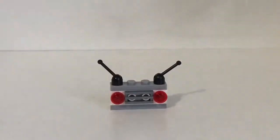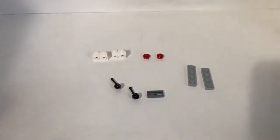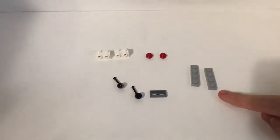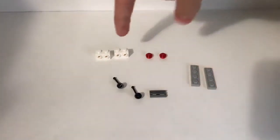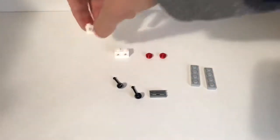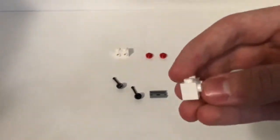So I'm just going to show you how to build it. Here are all the pieces you need: two 1x4 flat grays, two red see-through or transparent studs, two 1x2 white bricks with the studs, two black antennas, and then one vent piece.